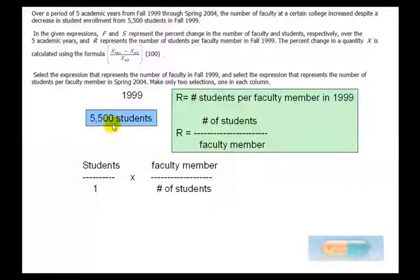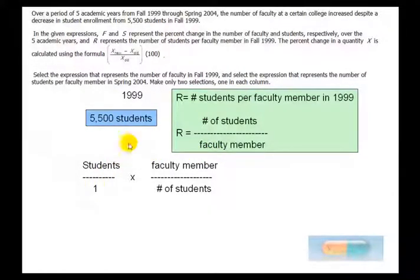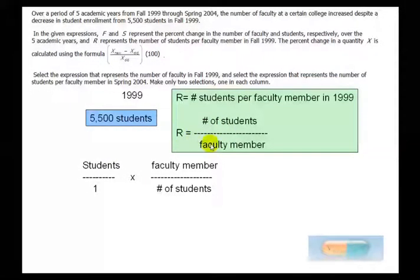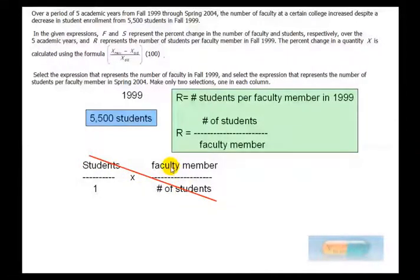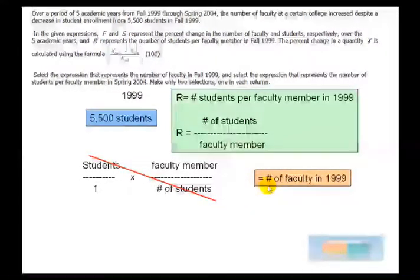With that number of students on the bottom then you could somehow cancel this students with students and then multiply it out. So to draw it out this one comes down to students over one. This one becomes if you flip R to make it one over R then you'll get faculty member per students. And you can just cancel the students out and you'll get faculty members. So essentially what I'm saying is you take 5,500 you multiply it by 1 over R which is the same as dividing it by R. And that'll give you the number of faculty in 1999.